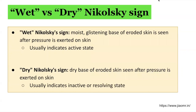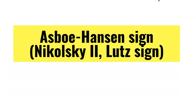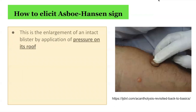The next sign we will discuss is Asbo-Hansen sign, which is otherwise known as Nikolsky sign 2 or Lutz sign. In order to elicit Asbo-Hansen sign, this is essentially the enhancement of an intact blister by application of pressure on its roof, usually vertical pressure.